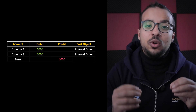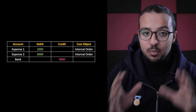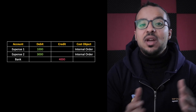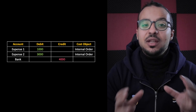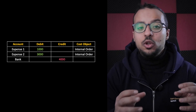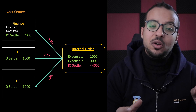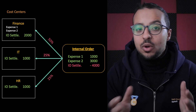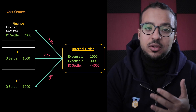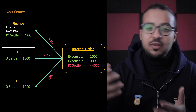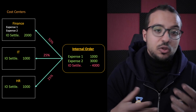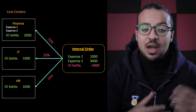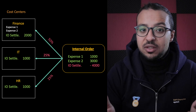So at any point in time, if we want to report on the expenses we spent for the marketing event, we can easily do this. At the end of the event, we are going to settle the internal order, which means we allocate all of the expenses in the internal order to the different cost centers based on any allocation base we want. We can use fixed percentages — for example, finance is 50%, IT 20%, and so on — or fixed amounts, or statistical key figures as we used before with cost centers. This is very flexible.